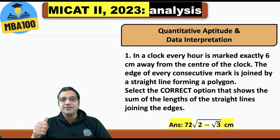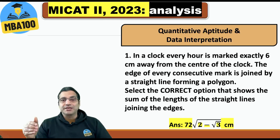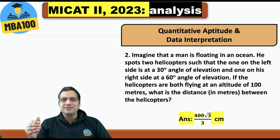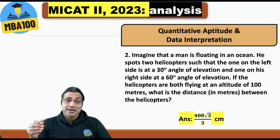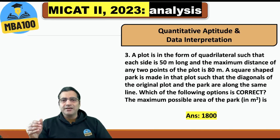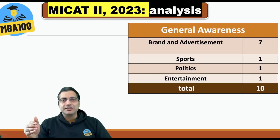One question had the answer 72 times the square root of (2 minus root 3). Another question looked dangerous but was very simple — the answer was 400 root 3 divided by root 3. There was also a question: 'A plot is in the form of a quadrilateral such that...' — an interesting question with the answer being 1800. That is how the quantitative aptitude section was.